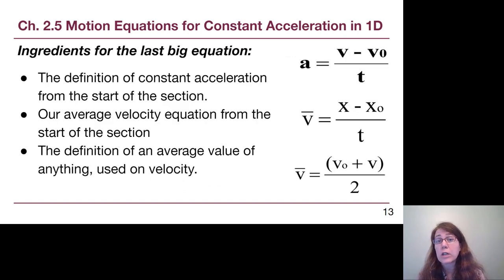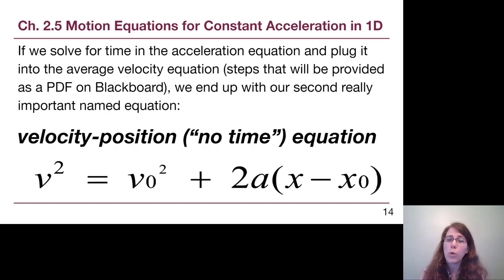And then our ingredients for our last big equation is we start out with the definition of constant acceleration that we simplified at the beginning of this lecture video. We add in our average velocity equation from the first half of chapter 2, and we use this newer ingredient of average velocity when we have constant acceleration. And again, just like before, we mix all these up. We bake this beautiful cake. We will show you how that works in a posted PDF. And what we end up with is the velocity-position equation, sometimes known as the no-time equation.